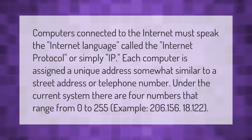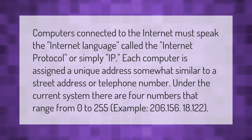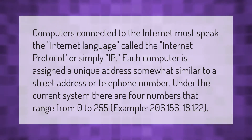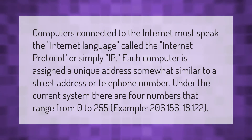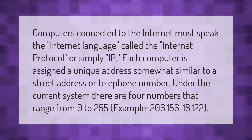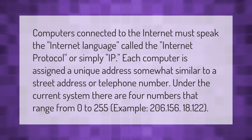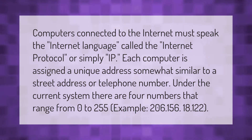Computers connected to the internet must speak the internet language called the Internet Protocol, or simply IP. Each computer is assigned a unique address, somewhat similar to a street address or telephone number. Under the current system, there are four numbers that range from 0 to 255 — for example, 206.156.18.122.